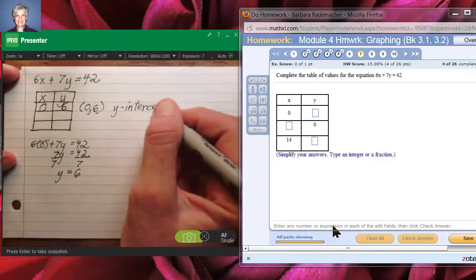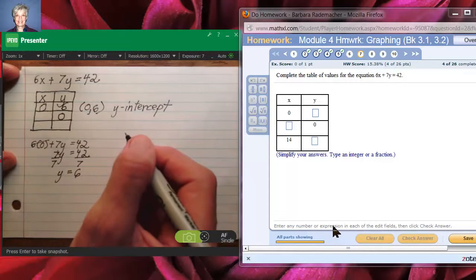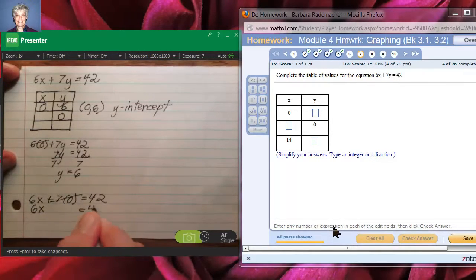For the next point, we're told that the y coordinate is 0, and we're being asked to find the x coordinate. So we're going to have 6x plus 7 times 0 equals 42. 7 times 0 is 0, so we'll have 6x equals 42. Then divide by 6 and divide by 6, and what do you get? You get x equals 7.